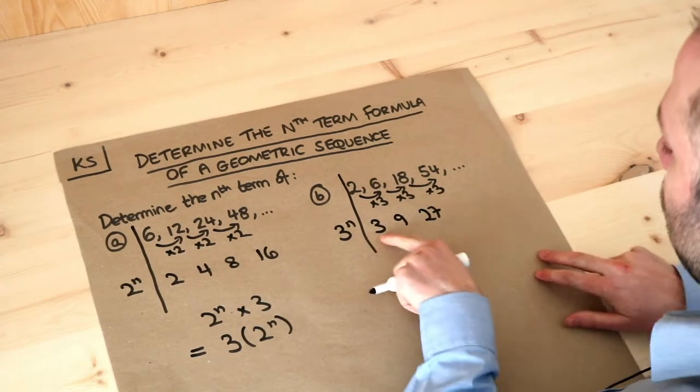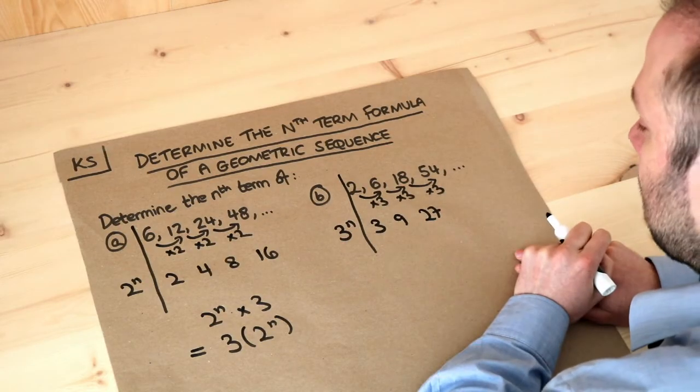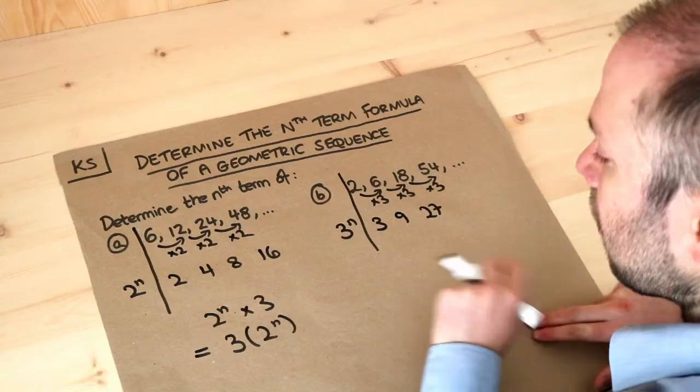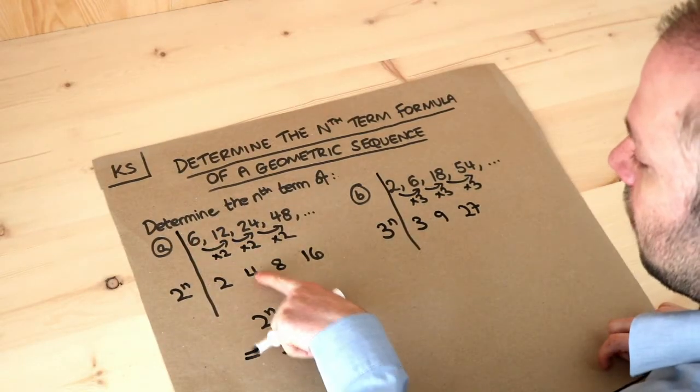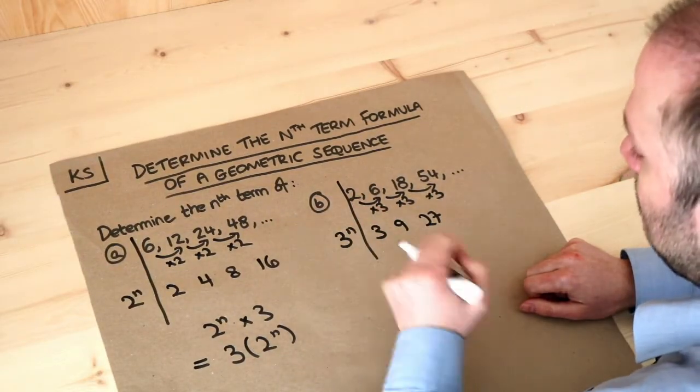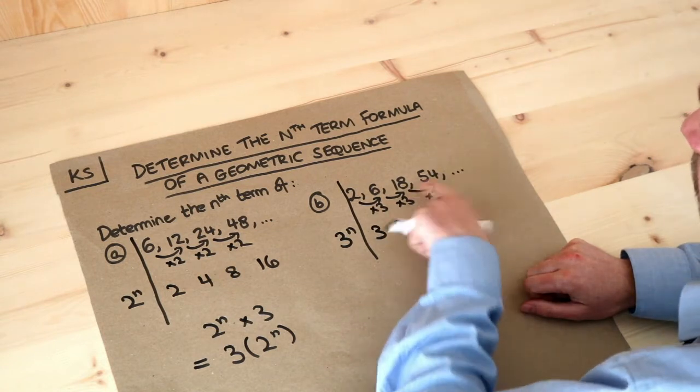What do we need to do to this sequence to get us the correct sequence of 2, 6, 18? It's always what we need to either multiply or divide by. What do we need to do to 3 to get to 2? What do we need to times by? What do we times 9 by to get to 6? What do we times 27 by to get to 18?